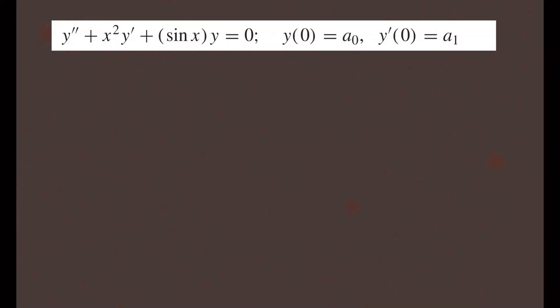Now we're going to find the series solution of the second-order differential equations near the ordinary point x₀ equal to 0. So this point right here, this is our point x₀. We know the solution form is going to be y equals the sum starting from 0 to infinity of a_n times (x minus x₀) to the power n.